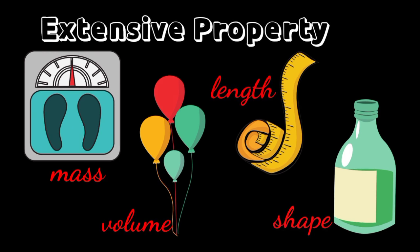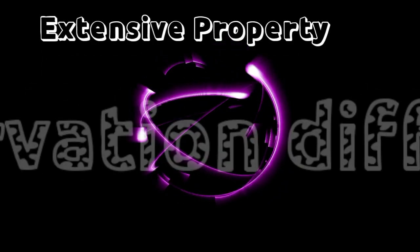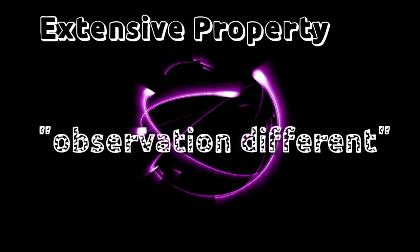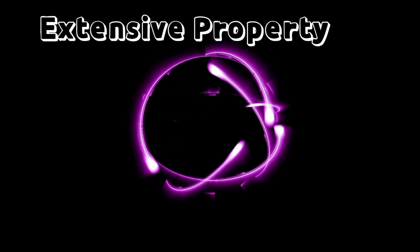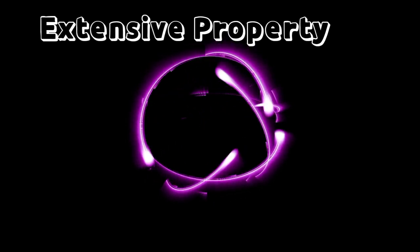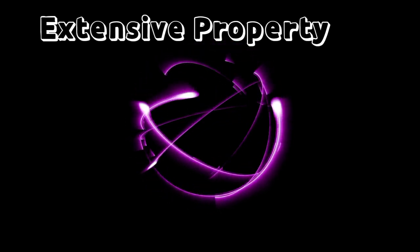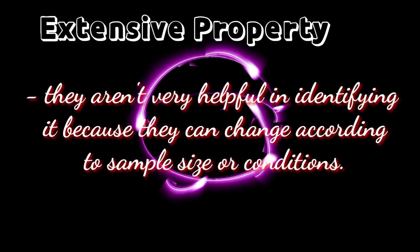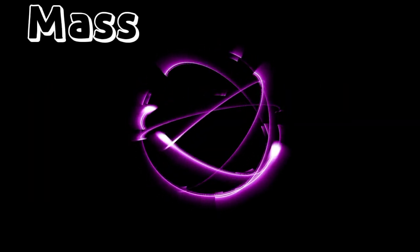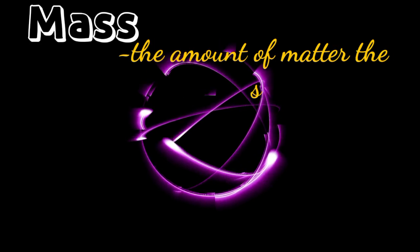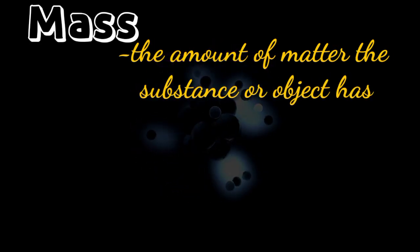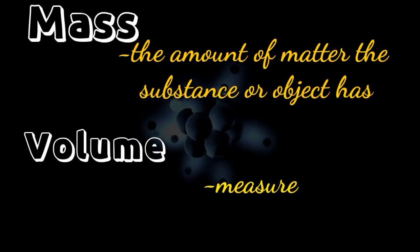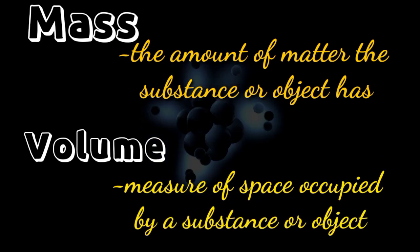Extensive property changes based on how much of a substance is being observed. If more or less would make the observation different, it would be this type of property. While extensive properties are great for describing a sample, they aren't very helpful in identifying it because they can change according to sample size or conditions. Mass is defined as the amount of matter a substance or object has, and the measure of space occupied by a substance or object is called volume.